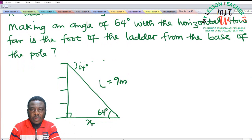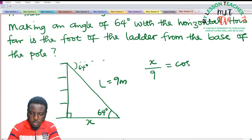Now we are asked to find the value for x. We shall use the trig ratio in solving this. We know that the ratio between the adjacent side to the hypotenuse side is the cosine of angle 64. It therefore means that x divided by 9 equals cos 64 degrees.